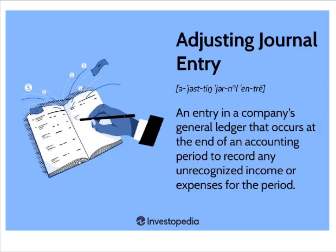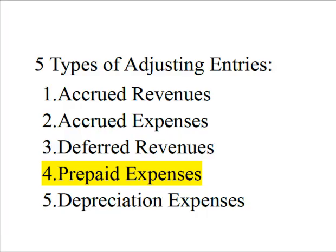The end of the accounting period can be the end of a month, the end of a quarter, or oftentimes the end of the year. There are five types of adjusting entries: we can adjust for accrued revenues and accrued expenses, deferred revenues, prepaid expenses, and depreciation expense. But this video is going to focus just on prepaid expenses.